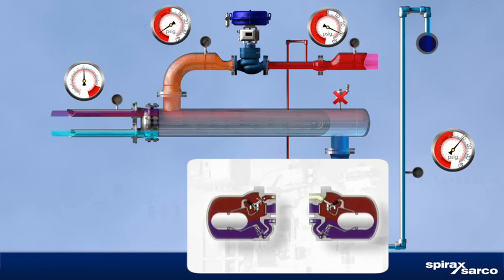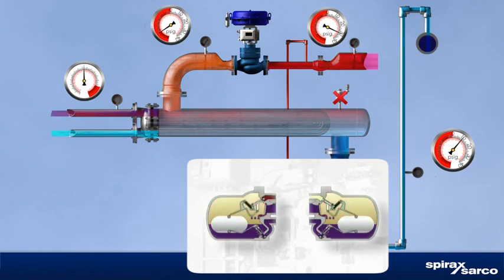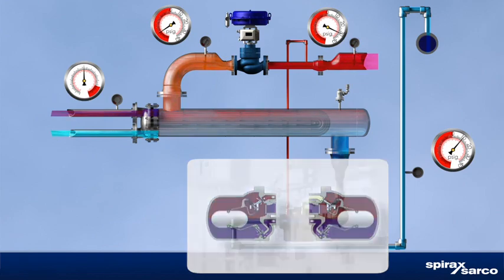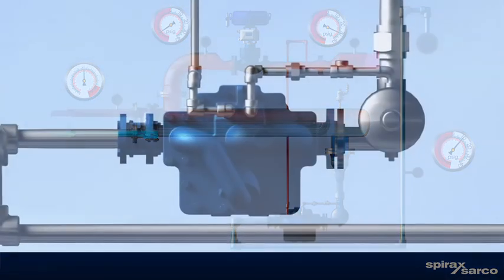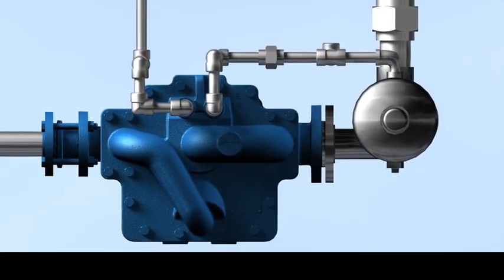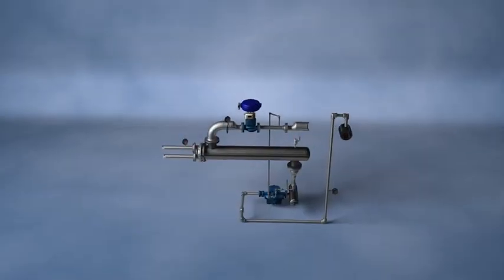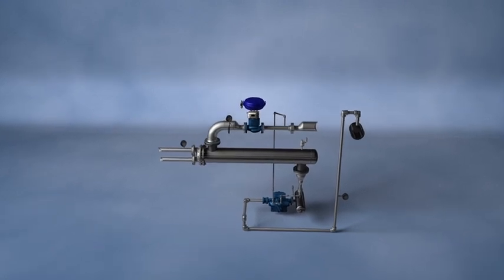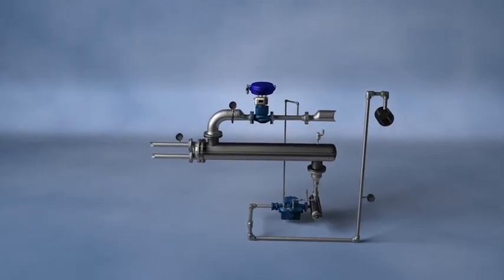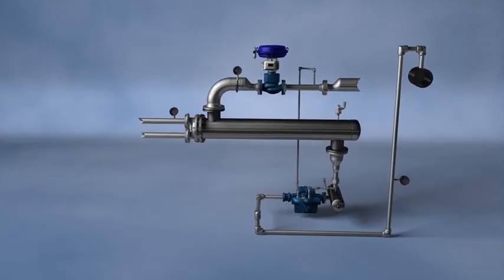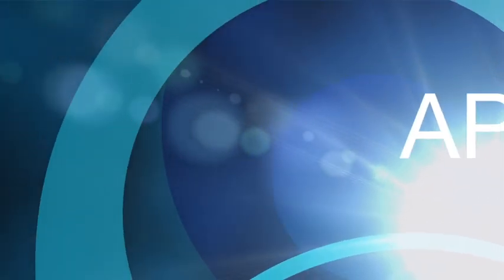A survey of your heat exchanger and condensate return system operating and maintenance data can uncover the below-par performance that indicates stall. If present, an automatic pump trap is an easy solution that quickly returns dividends in process quality, energy savings, and reduced maintenance costs.